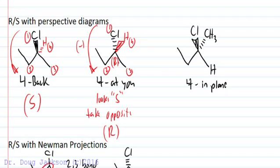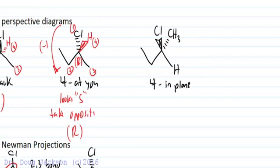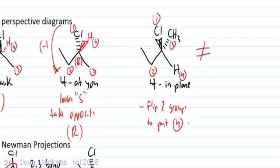Now the other thing that can happen is group 4 is in the plane. And if that happens, you have to do what I'm about to show you. You can't just take the opposite or you're going to only get it right 50% of the time. Let's number these and rank them. So chlorine is 1. Carbon to carbon is 2. Carbon to hydrogen is 3. And here's 4.